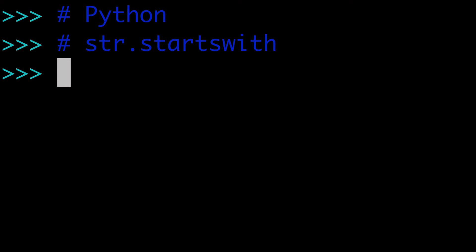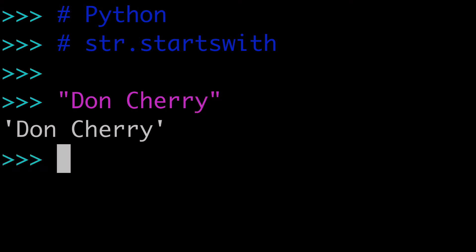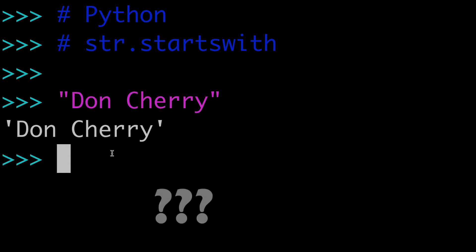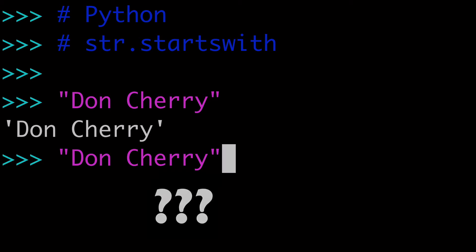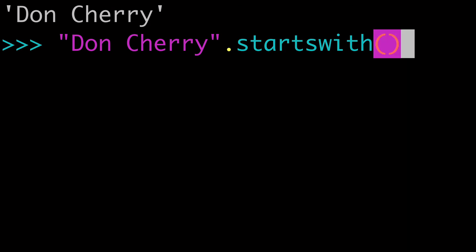In this video, we're covering the startsWith string method in Python. Let's say we have a string here, such as 'Don Cherry', and we wanted to know: does this string start with 'Don'? In other words, is the first name of this person Don? The easiest way to do that is with the startsWith string method.